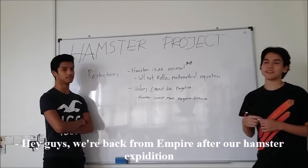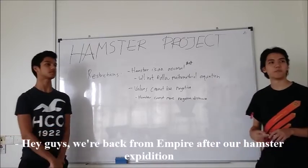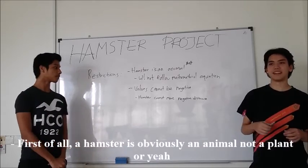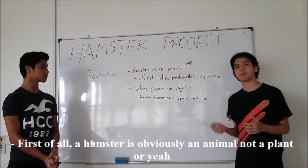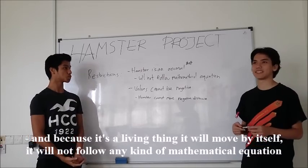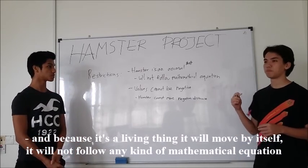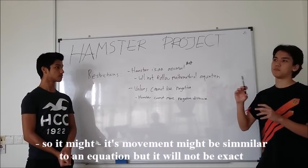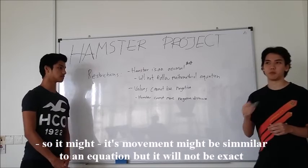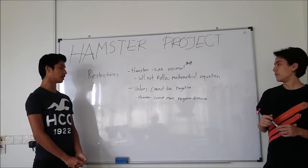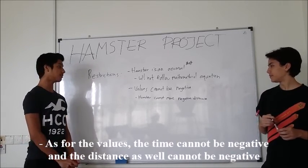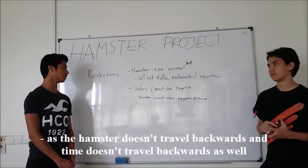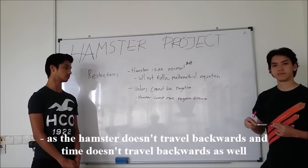Hey guys, we're back from Empire after our hamster expedition. And before we show you our results, we want to state some restrictions. Right. First of all, a hamster is obviously an animal and not a plant. And because it's a living thing, it will move by itself and will not follow any kind of mathematical equation. So its movement might be similar to an equation, but it will not be exact. As for the values, the time cannot be negative and the distance as well cannot be negative as the hamster doesn't travel backwards and time doesn't travel backwards as well.